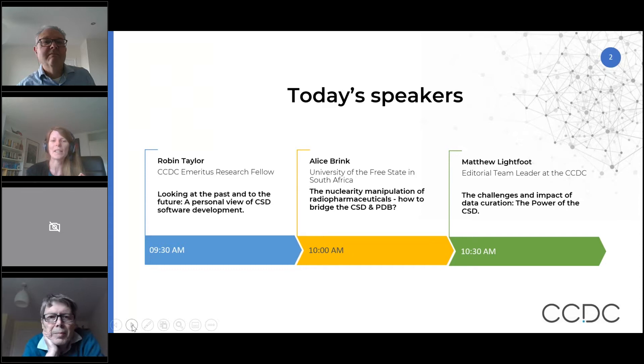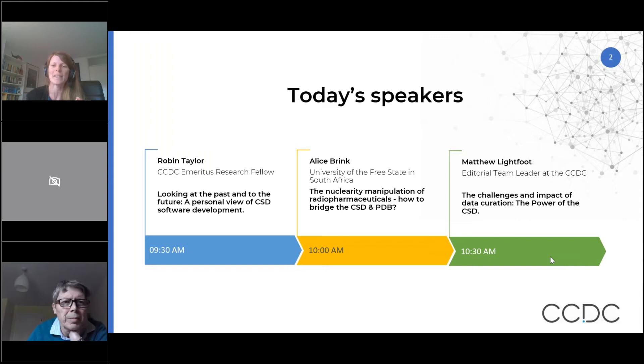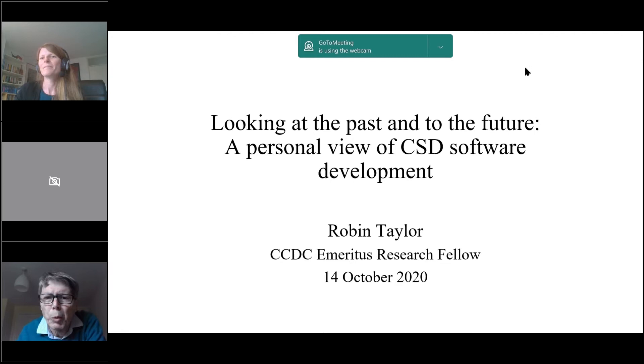He then returned to CCDC to lead our software development group during the years where software that most of you will be familiar with—Conquest, Mercury, IsoStar, and Mogul—were first released. In 2008 Robin left the CCDC to become a self-employed scientific software developer, and in 2013 he became an emeritus research fellow with the CCDC. Today Robin will be looking at the past and to the future to give us a personal view of CSD software development.